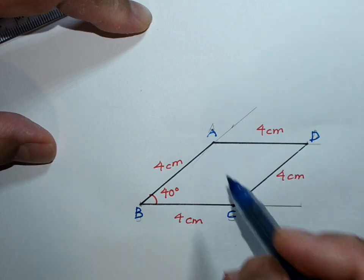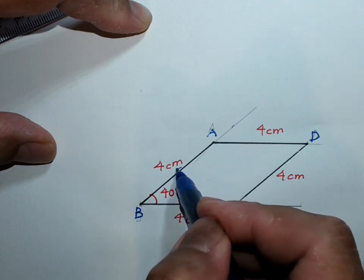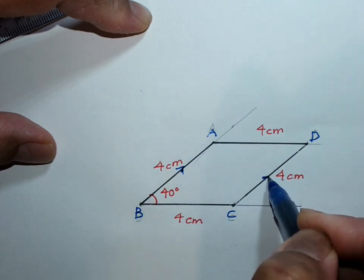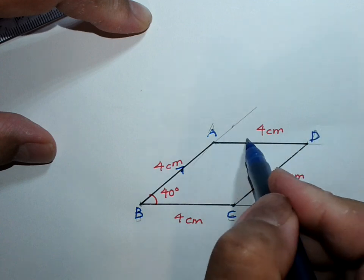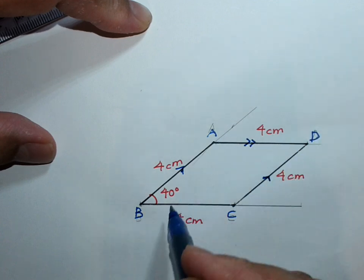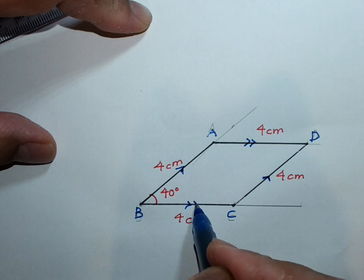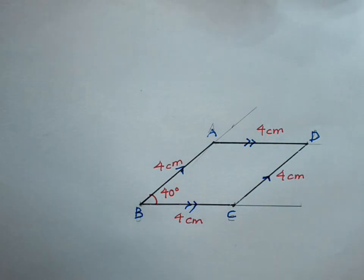And do take note that AB is parallel to CD, and AD is parallel to BC. Alright, you have this.